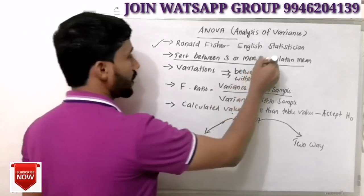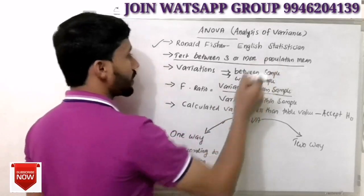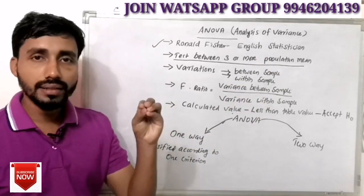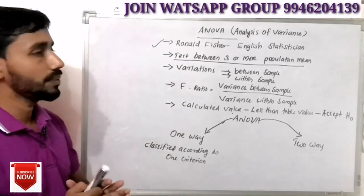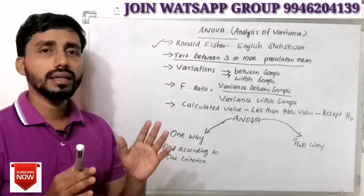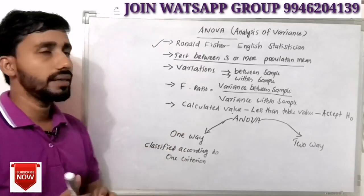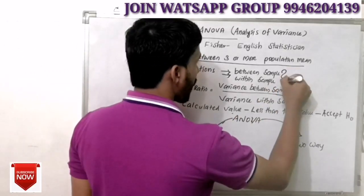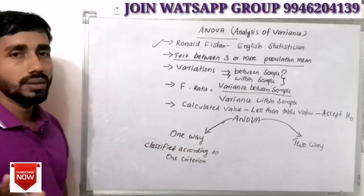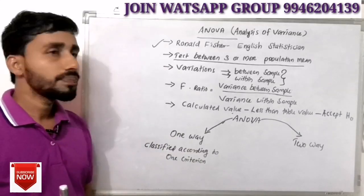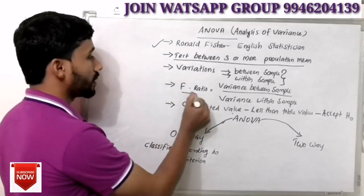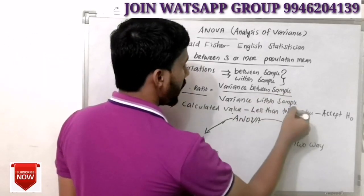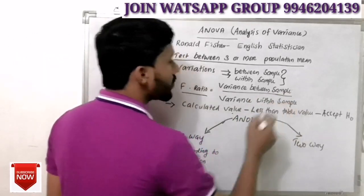In the analysis of variance, there are two variants: between-sample and within-sample. We will discuss the variance between sample divided by variance within sample.